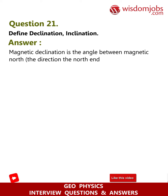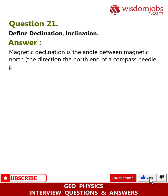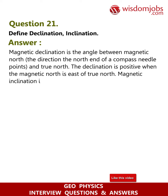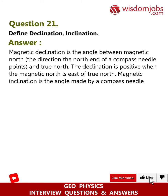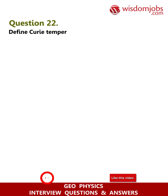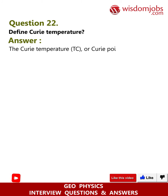Question 21: Define declination and inclination. Answer: Magnetic declination is the angle between magnetic north — the direction the north end of a compass needle points — and true north. The declination is positive when magnetic north is east of true north. Magnetic inclination is the angle made by a compass needle when the compass is held in a vertical orientation.